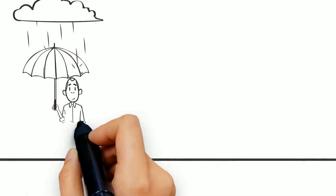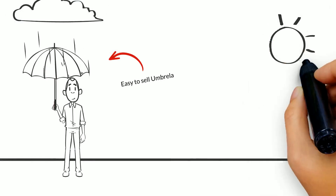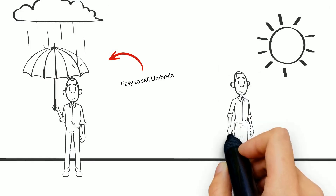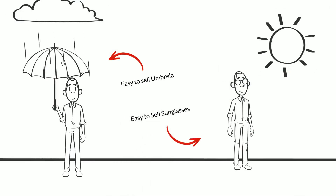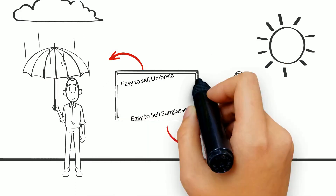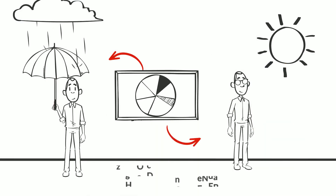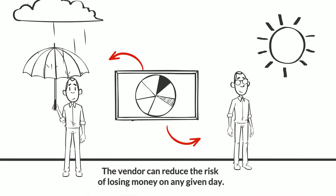Street vendors know when it's raining, it's easier to sell umbrellas but harder to sell sunglasses. And when it's sunny, the reverse is true. By selling both items — in other words, by diversifying the product line — the vendor can reduce the risk of losing money on any given day.